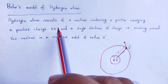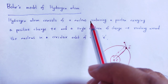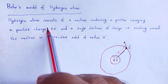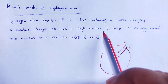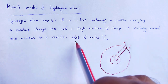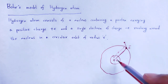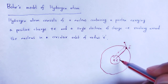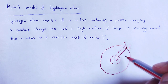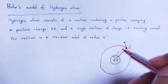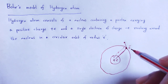The hydrogen atom consists of a nucleus containing a proton, that proton carrying a positive charge plus e, and a single electron of charge minus e, which is revolving around the nucleus in a circular orbit having radius r. The charge of the proton is plus e, present in the nucleus, and the charge of the electron is minus e, revolving around the nucleus in a circular orbit.